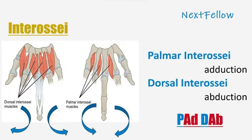Interossei are intrinsic muscles of the hand that help in adduction and abduction of fingers. Palmar interossei help in adduction and dorsal interossei help in abduction. The mnemonic is PAD — palmar adduction — and DAB — dorsal abduction.